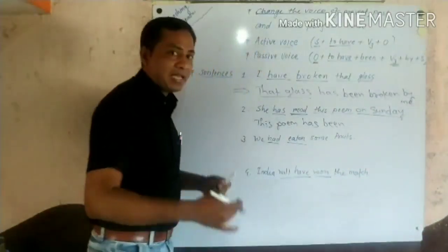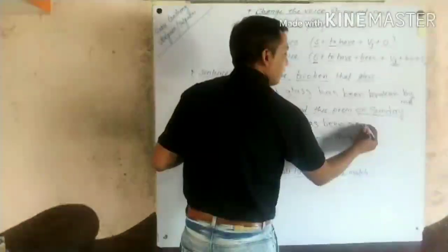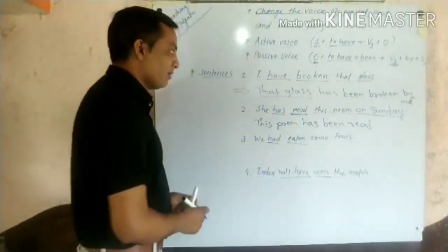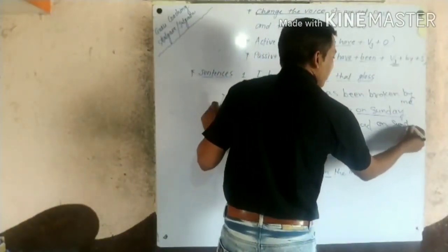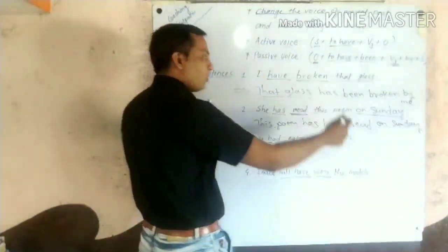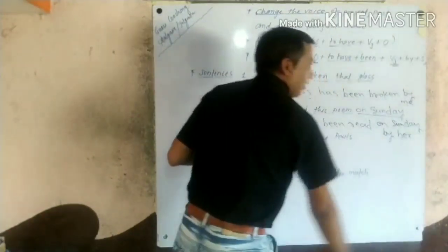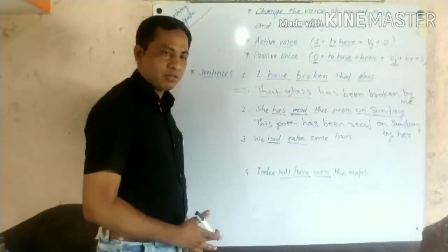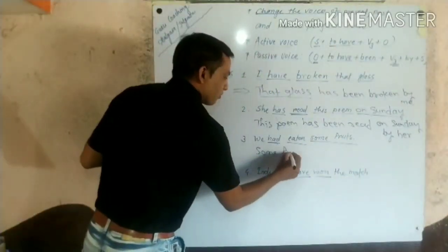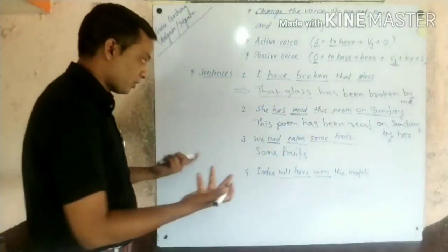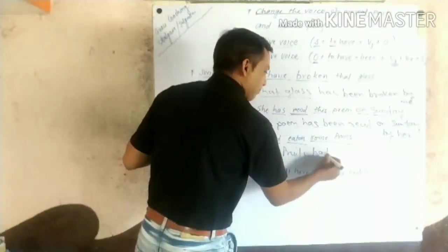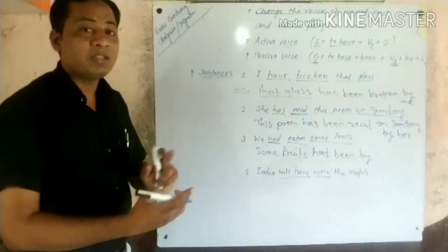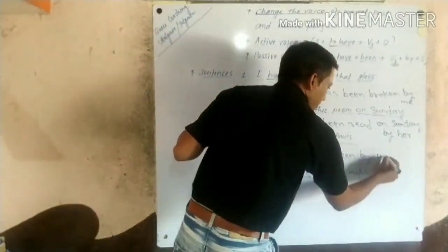For example: 'This poem has been read on Sunday' — here 'on Sunday' is the prepositional object. The subject is 'she,' which is a pronoun, so we write the objective case of 'she,' which is 'her.' In the next sentence, which is the past perfect example, the object is 'the fruits.' The subject is singular or plural — 'had' remains the same in both cases. The objective case applies to pronouns like 'we,' whose objective case is 'us.'